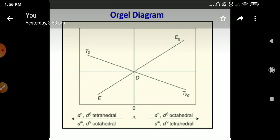For D2, D8, the allowed transition is 3F and 3P. For D3 and D7, the allowed transition is 4F and 4P. For D4 and D6, the allowed transition is 5D. For D5, the allowed transition is 6S.